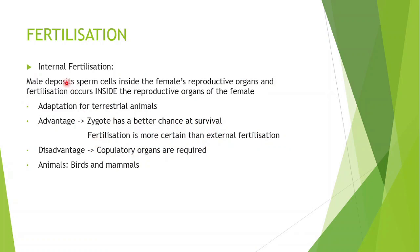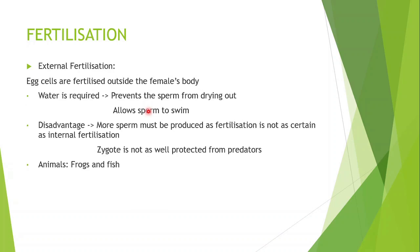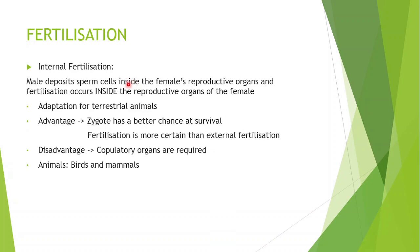So, fertilization. You get internal fertilization and external fertilization. Internal fertilization is when the male deposits the sperm cells inside the female's reproductive organs, and therefore fertilization occurs inside the reproductive organs of the female. This is also an adaptation for terrestrial animals, because external fertilization requires water — but internal fertilization is for land animals, since there's no water on land, so it's an adaptation for them to reproduce.